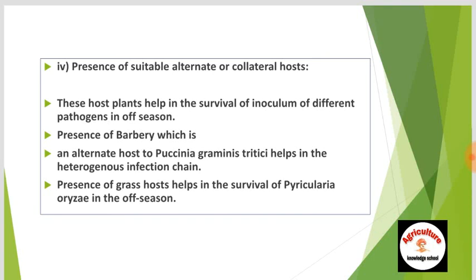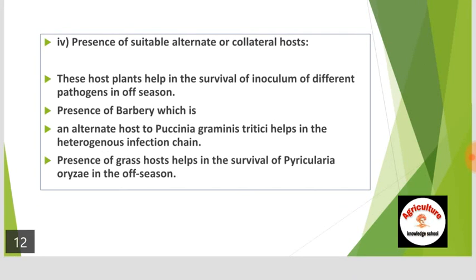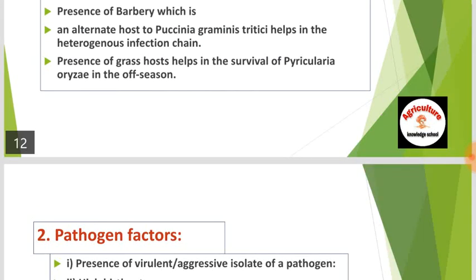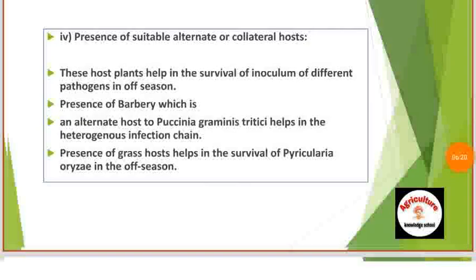Fourth is the presence of suitable alternate or collateral host. These host plants help in the survival of inoculum of different pathogens in the offseason. Presence of barberry, which is an alternate host to Puccinia graminis tritici type, helps in the heterogeneous infection chain. Presence of grass weeds helps in the survival of Pyricularia oryzae in the offseason.